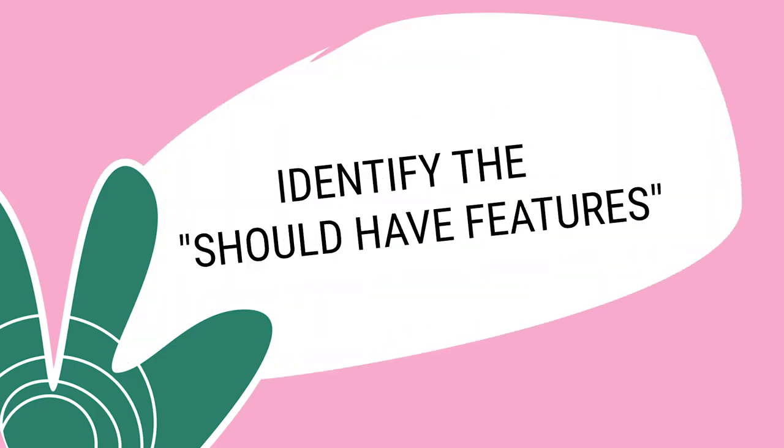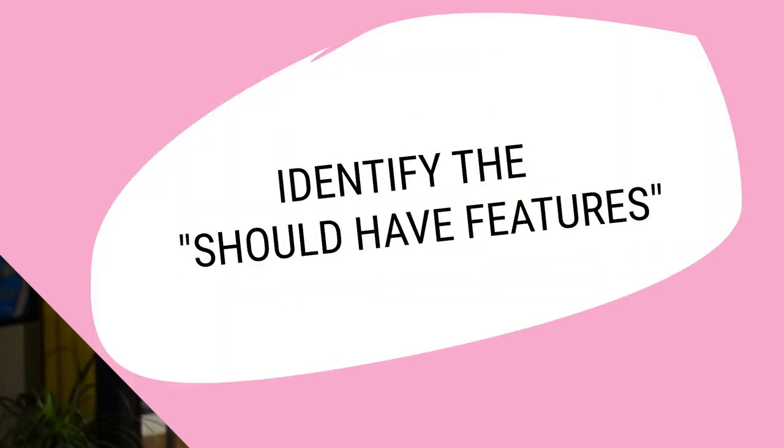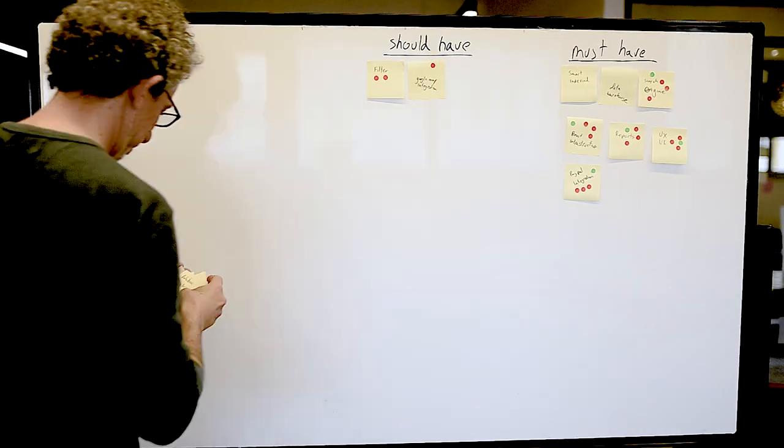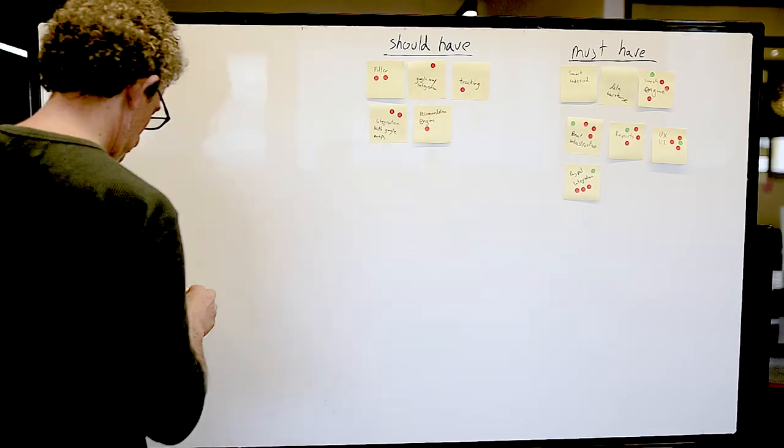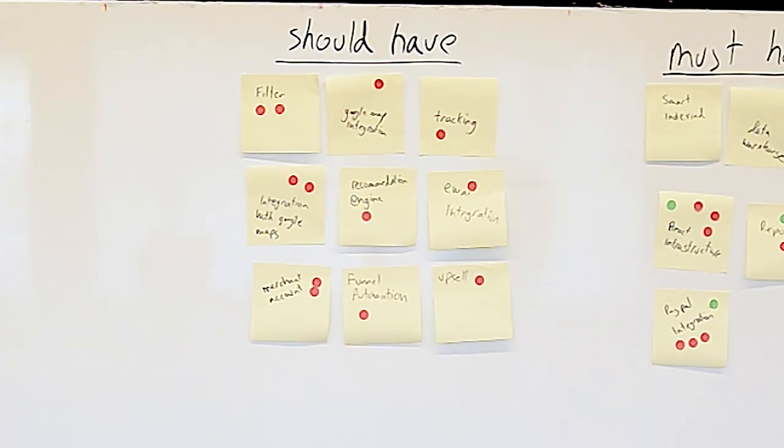Step five: identify the should-have features. These features must be included in the MVP — the functionality is essential to the user journey like the must-haves, but the quality of execution can be compromised at this point. For example, you may have to have a payment gate at launch but you can opt for only a simple PayPal cart button instead of fancy payment integration. Take all the items that got votes but were not selected as must-haves and group them into the list titled should-haves.